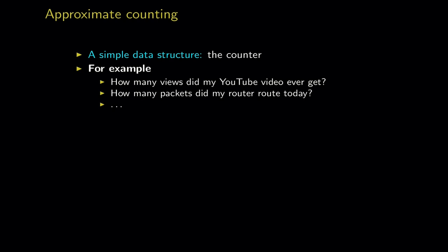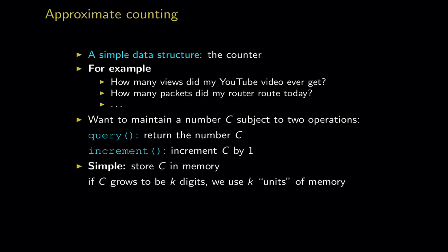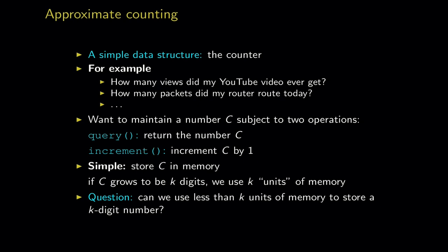The data structure is a counter. There's one update operation — increment — the counter starts at zero, and the query returns the counter value. The simplest solution is to store the counter in memory: if the counter grows to be a k-digit number then I use k bits of memory. The question is can we use less than k bits to store a k-digit number? The answer is no — but actually, sort of yes.